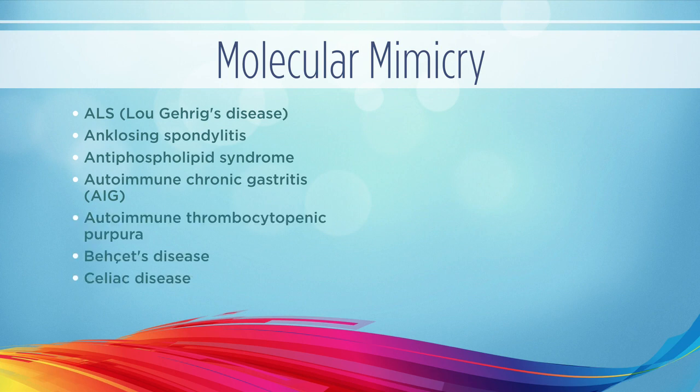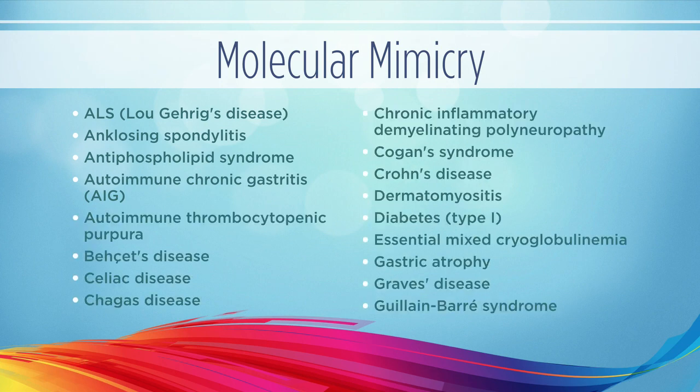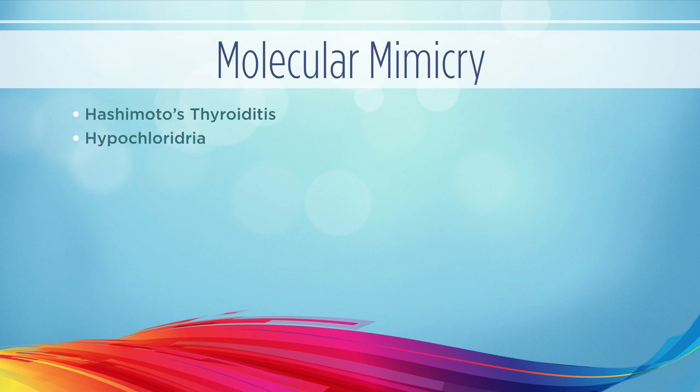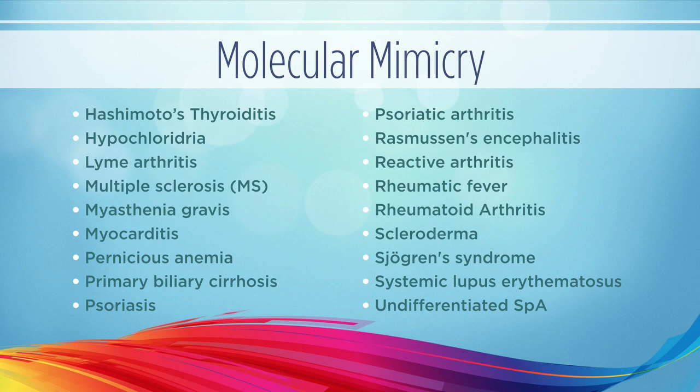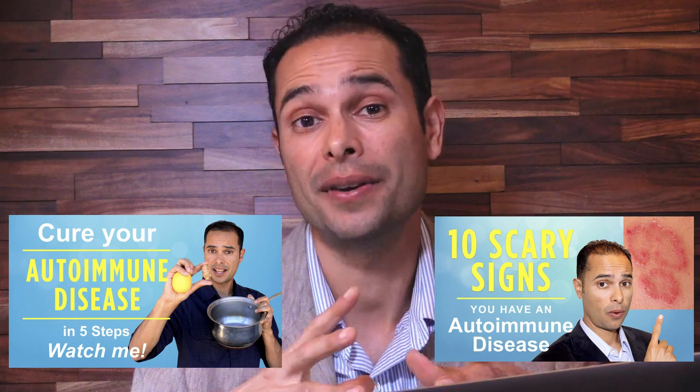So there you have it — I just explained autoimmune diseases and what's going on in about five minutes. This process is known as molecular mimicry, and molecular mimicry is the main biological process by which the body attacks itself in most of the well-known autoimmune diseases today. So what do you do if you have an autoimmune disease? Watch my video, Cure Your Autoimmune Disease in Five Steps. Or if you're wondering how to know if you even have one, watch my other video, 10 Scary Signs You Have an Autoimmune Disease.